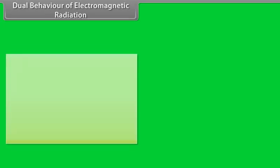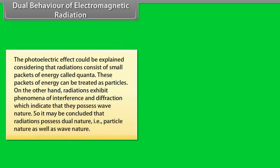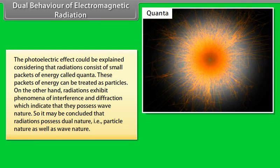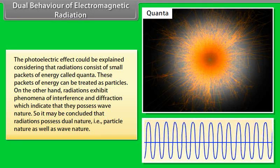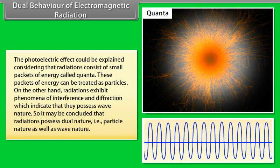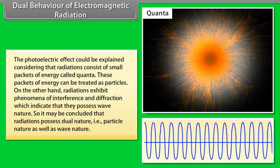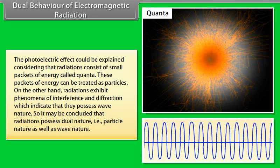Dual behavior of electromagnetic radiation: The photoelectric effect could be explained by considering radiations as small packets of energy (quanta), treatable as particles. On the other hand, radiations exhibit interference and diffraction, indicating wave nature. Therefore, radiations possess dual nature — both particle nature and wave nature.